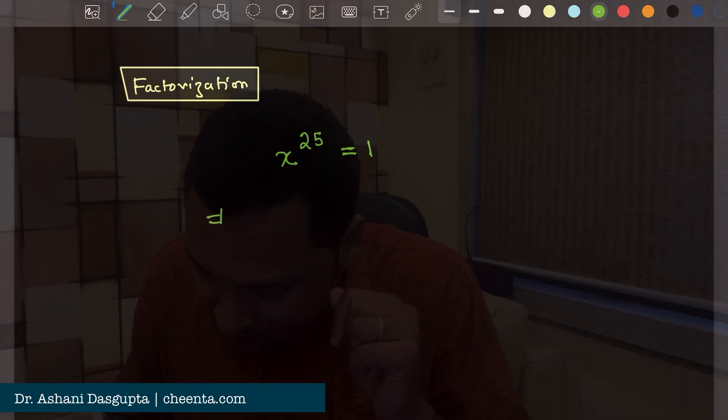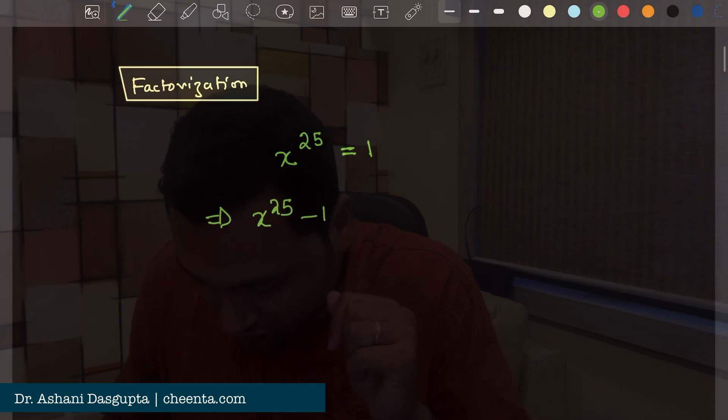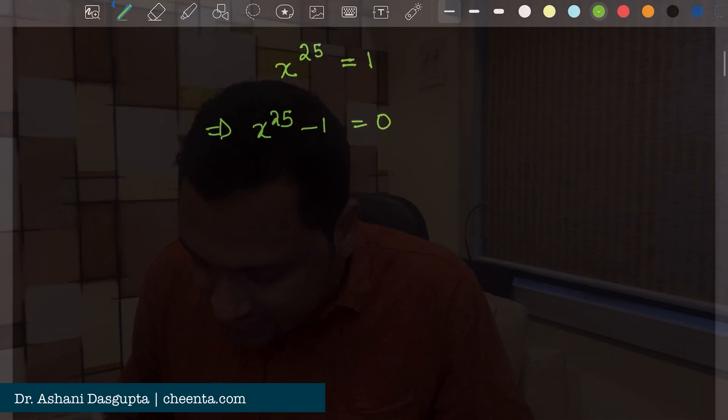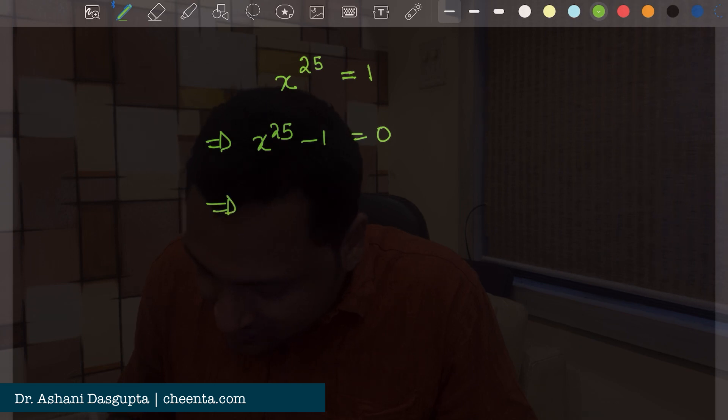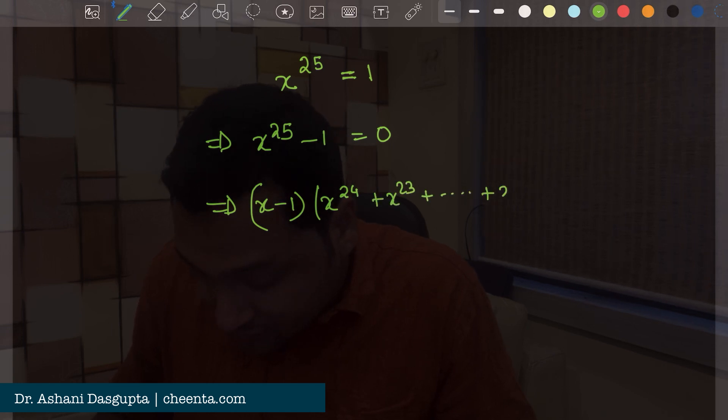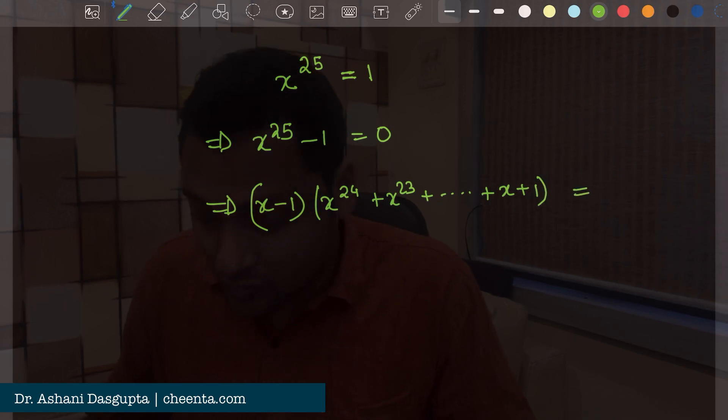So it's x to the power 25 minus 1 equal to 0. Now this can be factorized as x minus 1 times x to the power 24 plus x to the power 23 plus up to x plus 1 equal to 0.